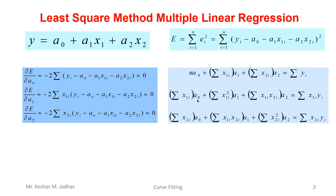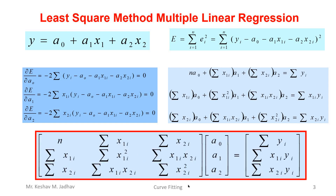The unknowns are a0, a1, and a2, and values such as summation x1, summation x2, summation y, etc. can be calculated from the given dataset. To solve these three equations we put them in matrix format: a coefficient matrix, an unknown matrix, and a right-hand side matrix. Solving this matrix gives values of a0, a1, and a2. This matrix formula works for two input variables x1 and x2 and one output variable, but the least square technique can be extended to more than two variables.